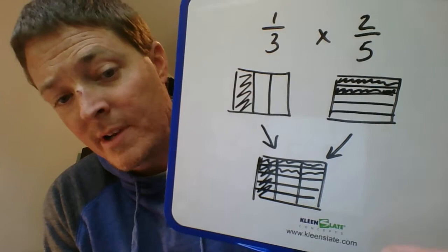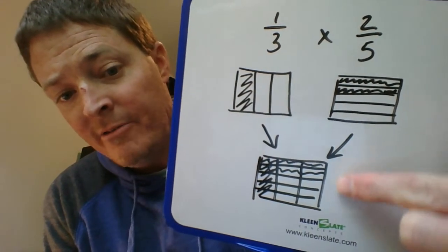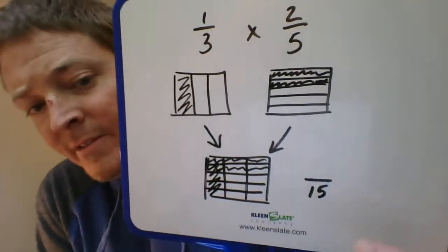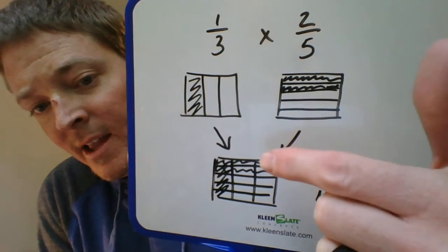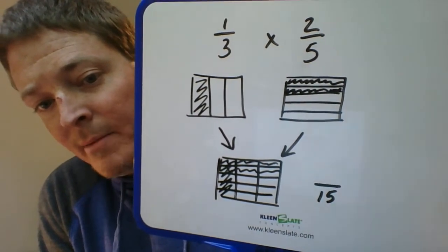Well, we have a five by three, so five by three in total is fifteen. So there's my fifteen. And then our numerator is going to be: all right, how many of those little boxes have double shading from both the one-third and the two-fifths?